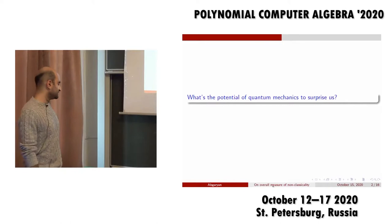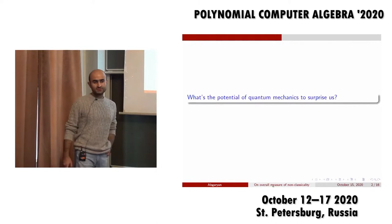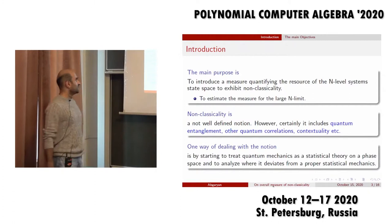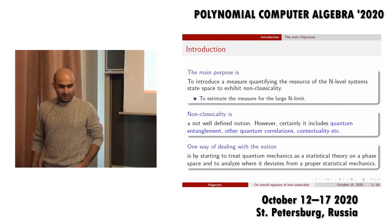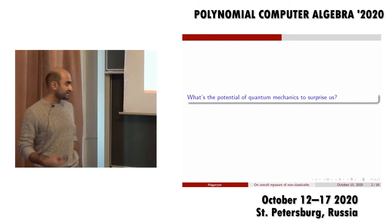Since physical observables may not commute, some of them are incompatible. However, on the other hand, this gives rise to certain features of quantum systems which we label as non-classical features. These include anything starting from quantum entanglement, going on with other quantum correlations, contextuality, and so on. We want to try to understand what is the capacity of the whole state space of quantum systems to exhibit these kinds of surprising features.